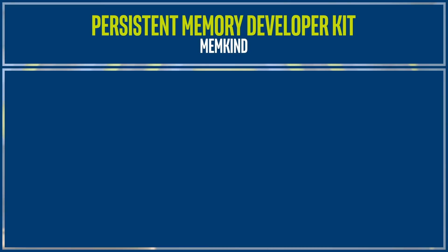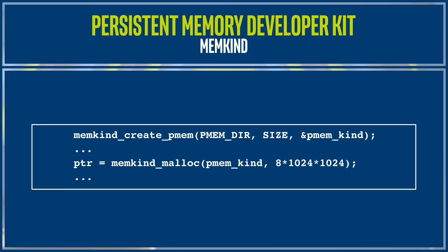There might be cases where applications might not care about the persistent aspect of persistent memory in AppDirect mode, and just want to use it as an extra pool of available memory. For this, developers can take advantage of the library memkind, also developed by Intel — a heap manager built on top of jemalloc, which provides a unified, malloc-like interface across a heterogeneous set of available memory pools in the system.